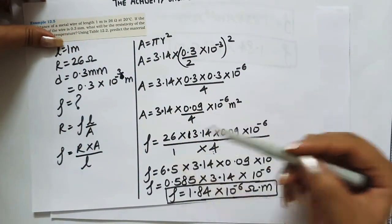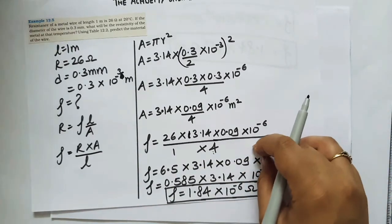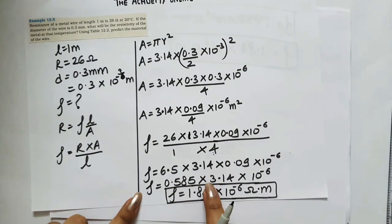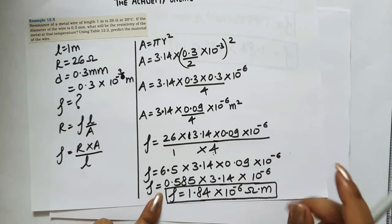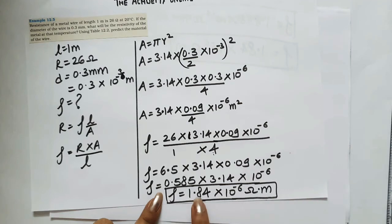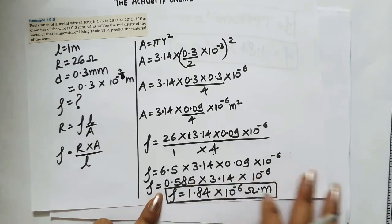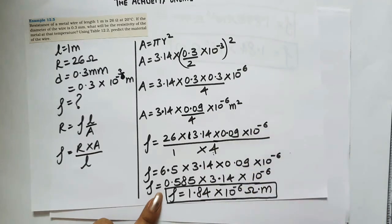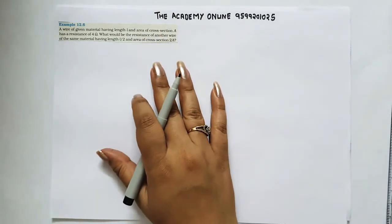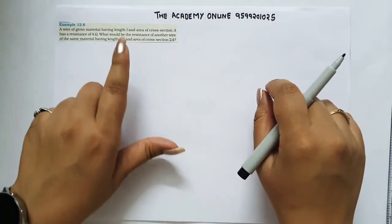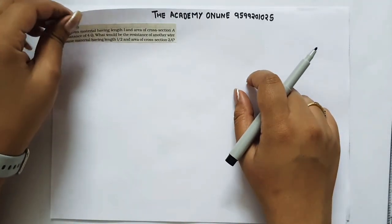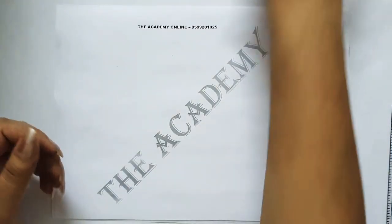In the exam, if a calculation takes too long, leave a little space and move on. Once you've finished the whole question paper, come back to complete it. Do not spend 15-20 minutes on one question and leave other questions. Next, before heading to example 12.6, we will cover one more topic on resistance.